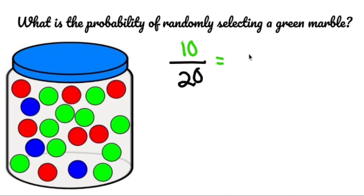So 10 out of 20 simplifies out to a half. Now you can answer a probability problem as a fraction, but if you also want to be fancy, you can turn it into a decimal or a percent. So you have half chance of reaching into here and randomly selecting a green marble.